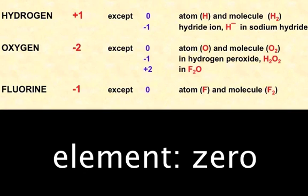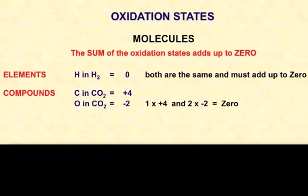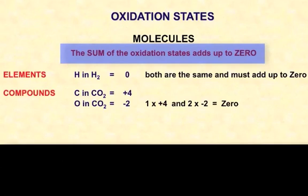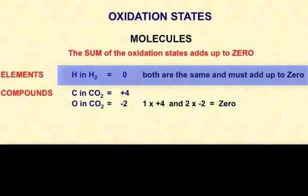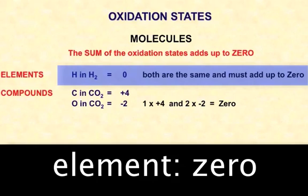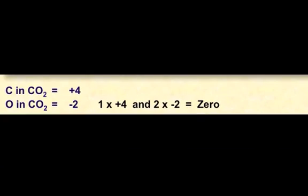In any molecule, any neutral molecule, the sum of the oxidation states must add up to zero. So whatever the individual oxidation states of the individual species that make up that compound, all together they must come to zero. So hydrogen in a hydrogen molecule must have an oxidation state of zero. Carbon dioxide CO2 must have an overall oxidation state of zero.